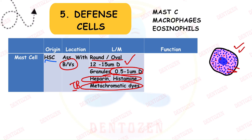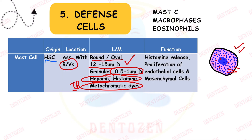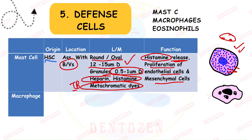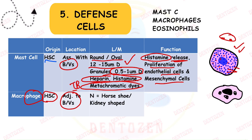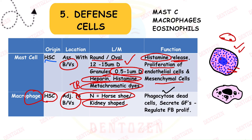Mast cells release histamine from their granules, causing proliferation of endothelial cells of blood vessels and mesenchymal cells. Macrophages — 'phage' meaning to eat — also originate from hematopoietic stem cells, are adjacent to blood vessels, have a horseshoe- or kidney-shaped nucleus, and may show granular debris in their cytoplasm from engulfed material. Their function is phagocytosis of dead cells.